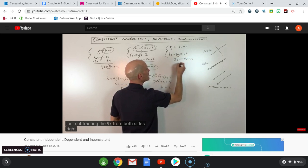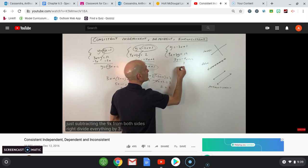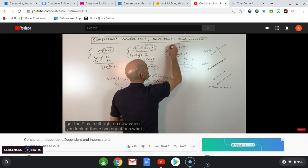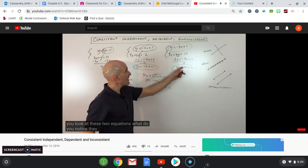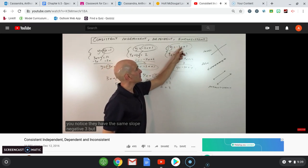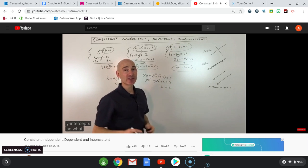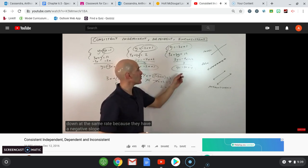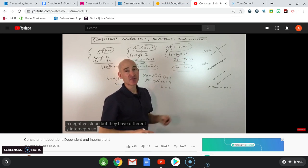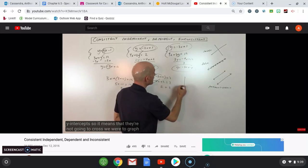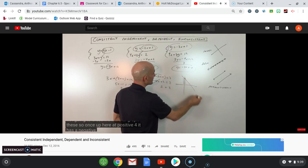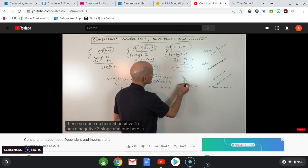Divide everything by 3 to get y by itself. Now when you look at these two equations, what do you notice? They have the same slope — negative 3 — but they have different y-intercepts. So they're going up, or in this case going down, at the same rate because of the negative slope, but they have different y-intercepts, so they're not going to cross. One is at positive 4 and one is at positive 1, both with a negative 3 slope.